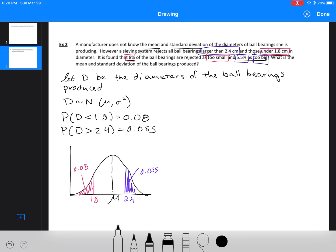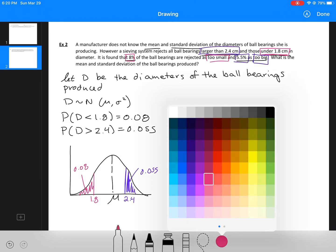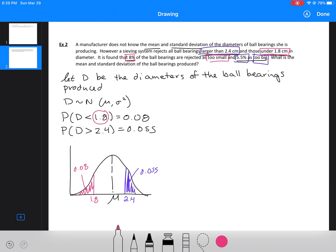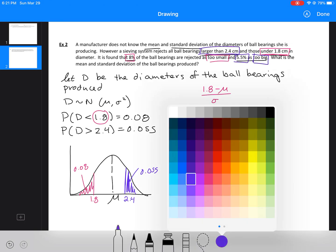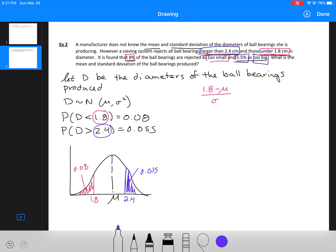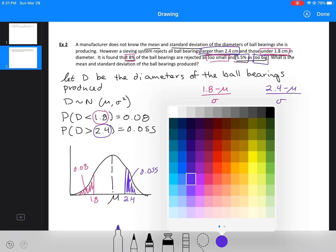So we've done our sketch. We've set up our normal distribution. The next thing that we're going to do is standardize our variables. So we're going to have to shift. I'm going to have to change 1.8 to where it would be on the normal distribution. So I'll set that up first: (1.8 - μ)/σ. And then I'm also going to have to shift 2.4. So that would be (2.4 - μ)/σ.